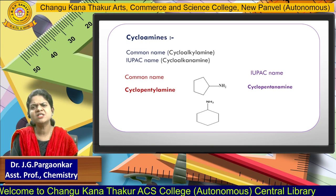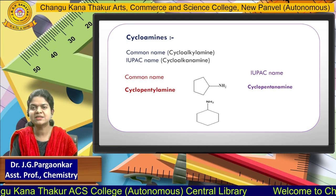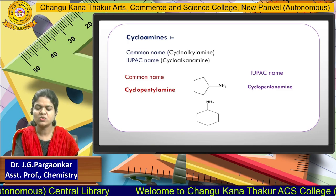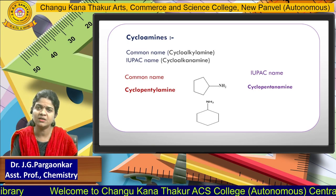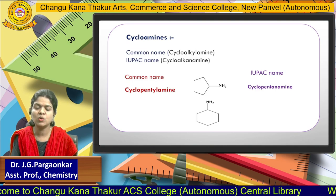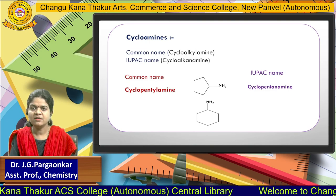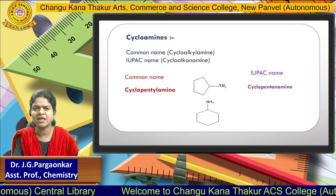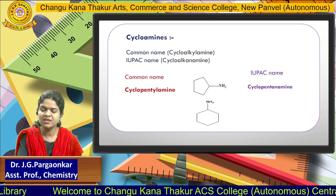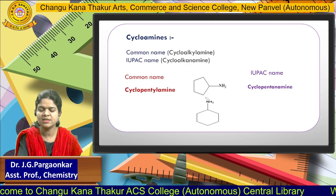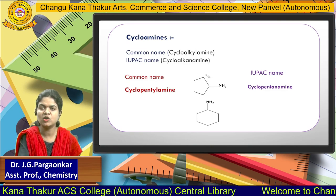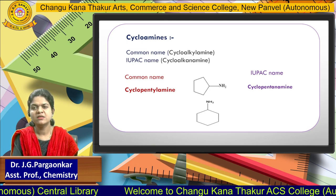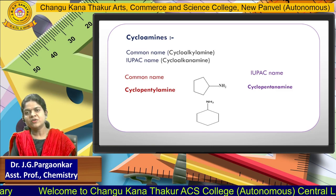The next point is cycloamines. Cycloamines means a cyclic ring is present. On screen, two rings are shown: a cyclopentyl ring and a cyclohexyl ring. When an NH2 group is attached to any cyclic ring, we call it a cycloamine. In the common name, we use the word cycloalkyl amine — so for the pentyl ring it is cyclopentylamine. We will see the next part in the next lecture. Take care, bye bye.